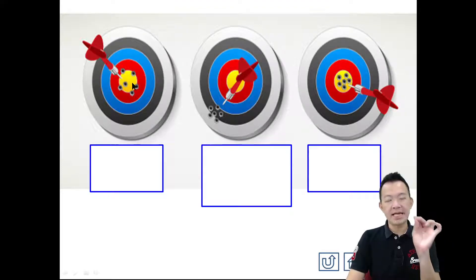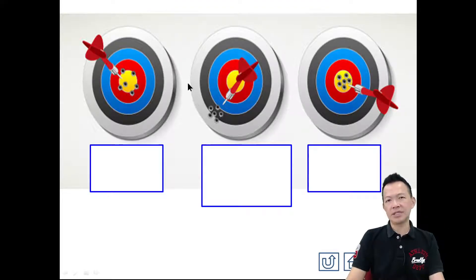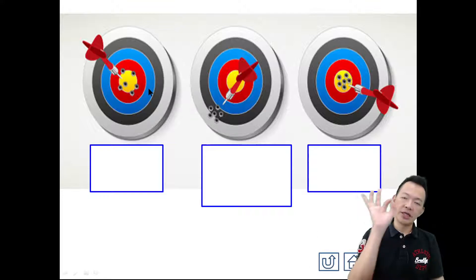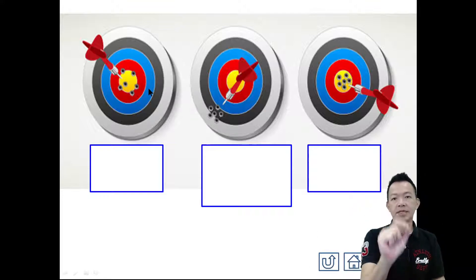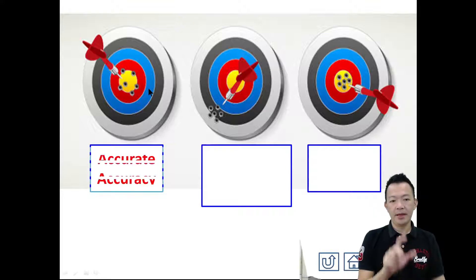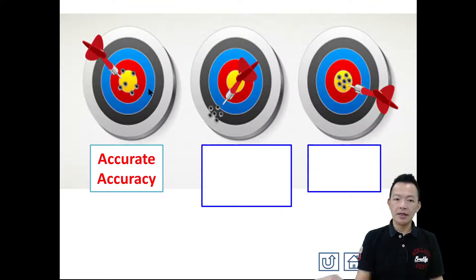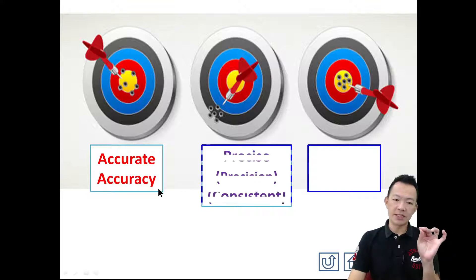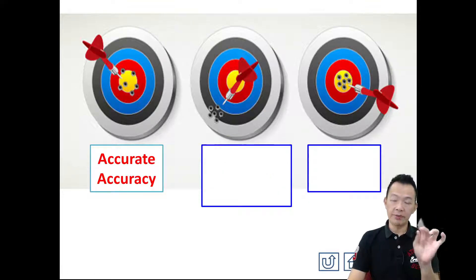But not precise. What does 'not precise' mean? Sometimes on the left, sometimes on the right — not every time in a fixed direction. So in this case: accurate but not precise. It has accuracy but no precision.